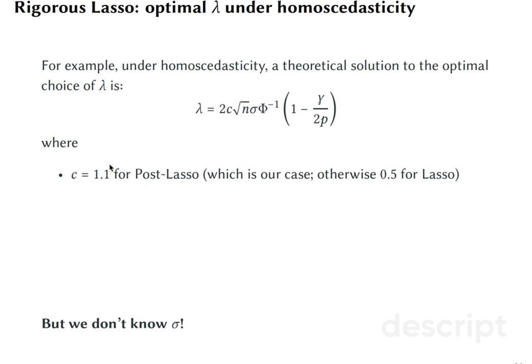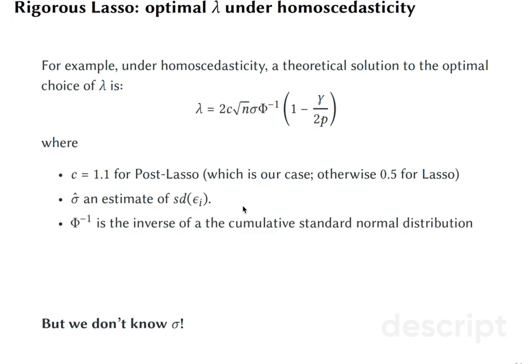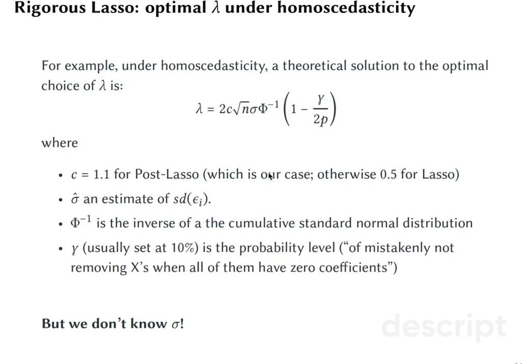C is a coefficient which you need to set up depending on whether you're using post-Lasso or just Lasso. If it's a post-Lasso, you use 1.1. Sigma here is true standard deviation of the residuals. We do not observe this, but what we plug into here is an estimate of standard deviation of the residuals. This is the inverse of the cumulative standard normal distribution. And gamma here, I usually set at 10 percent, is the probability level of mistakenly not removing all of the predictors when all of them actually are zero. Finally, N is the number of observations and P is the number of predictors.